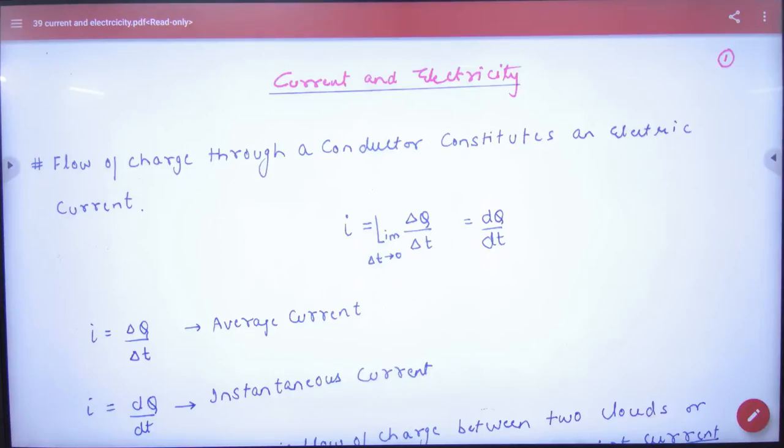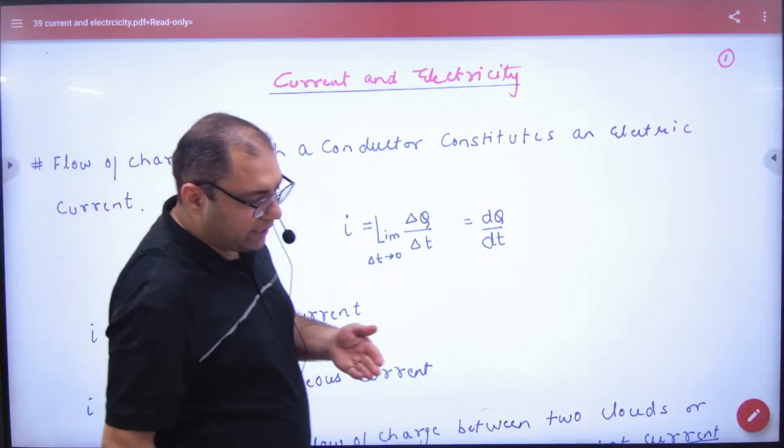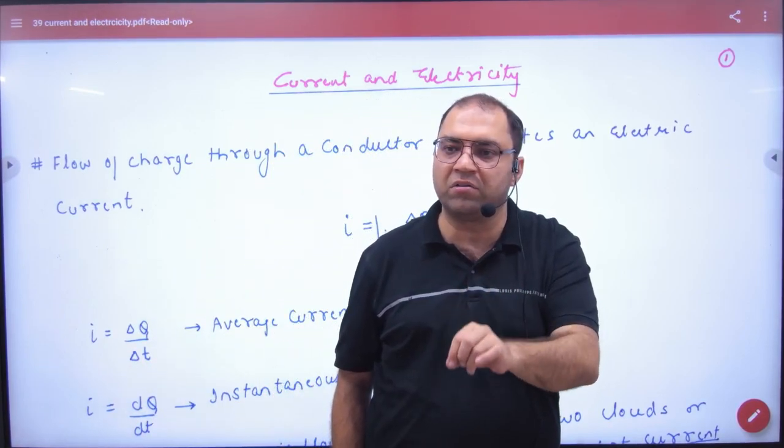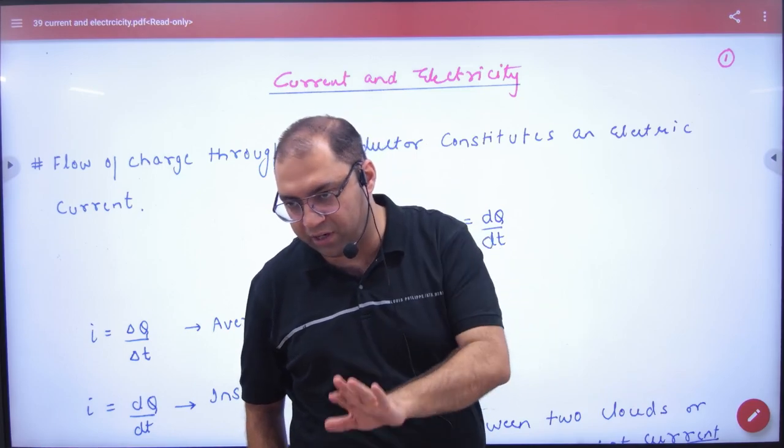Let's start with current and electricity. In current and electricity, the first thing is current means to move electrons in the wire, in the conductor.